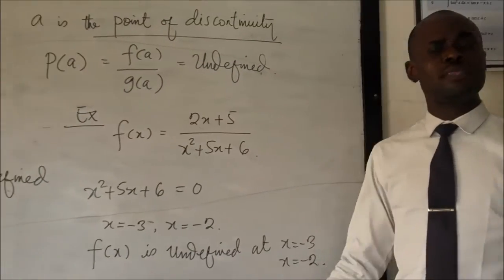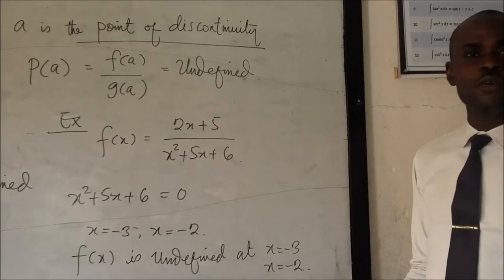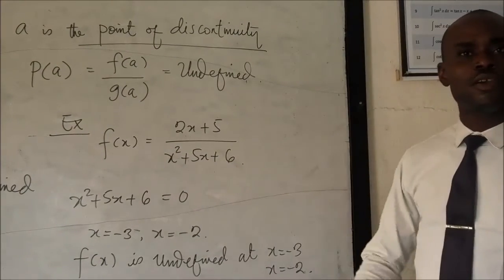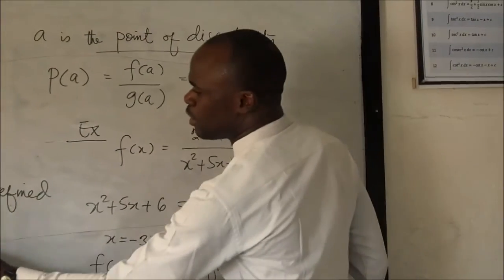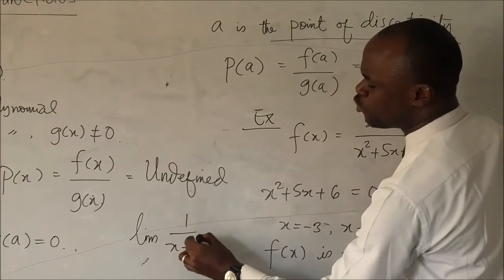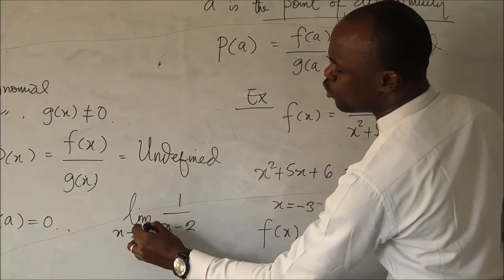So there are so many things concerning rational functions. You can also find the limit of rational functions. You can find the limit of 1 over x minus 2 as x tends to 2.